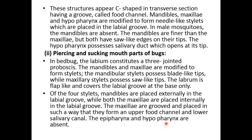In the piercing and sucking type in bed bugs, the labium consists of a three-jointed proboscis. The mandibles and maxillae are modified to form stylets. The mandibular stylets possess a blade-like tip, while the maxillary stylets possess a saw-like tip. The labrum is flap-like and covers the labial groove at the base only. The mandibles are placed externally in the labial groove, while both maxillae are placed internally. The maxillae are joined and arranged to form an upper food channel and a lower salivary channel. The epipharynx and hypopharynx are absent.